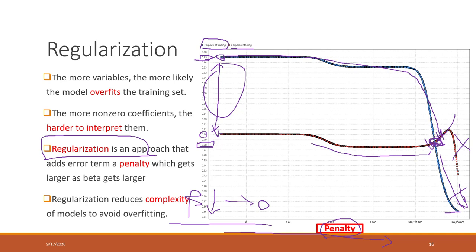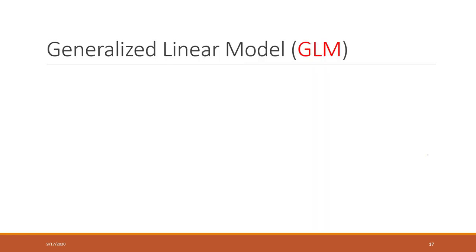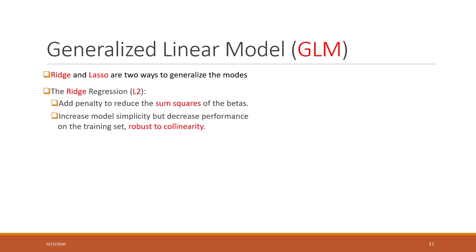That is the idea of regularization. For linear regression models, this type of model is called the generalized linear model. Generalized linear regression models can introduce penalties to our betas. Specifically, we have Ridge and also Lasso — those are two types of generalized linear regression models. Ridge is sometimes called L2.